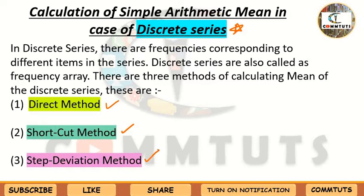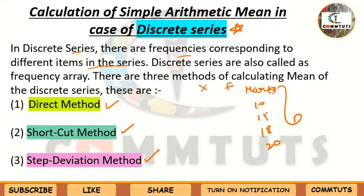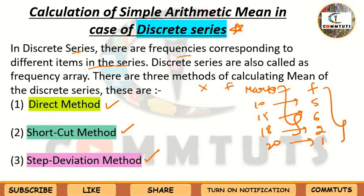In discrete series, items are given along with their corresponding frequencies. In individual series, you are only given the items — for example, students' marks like 10, 15, 18, 20. But in discrete series, you are also given the frequency: how many students got 10 marks (say 5), how many got 15 (say 6), 18 (say 2), and 20 (say 1). That frequency data makes it a discrete series.